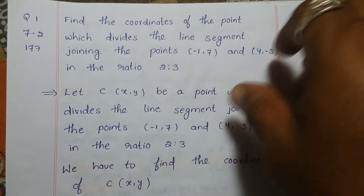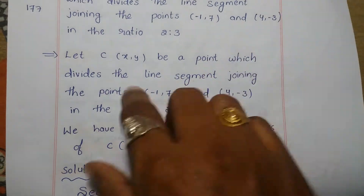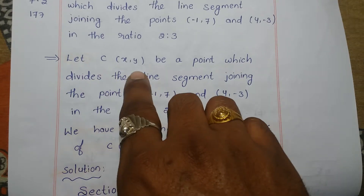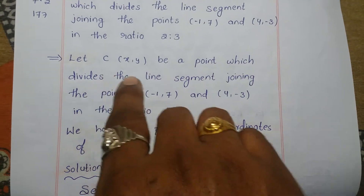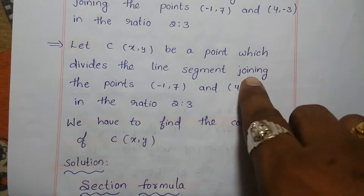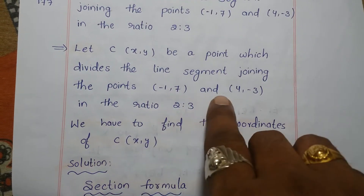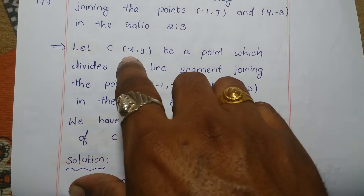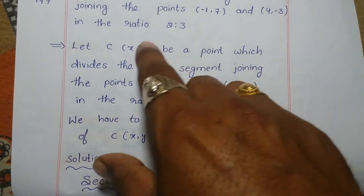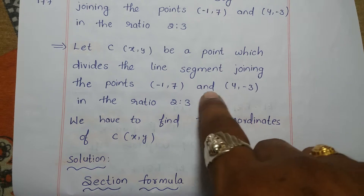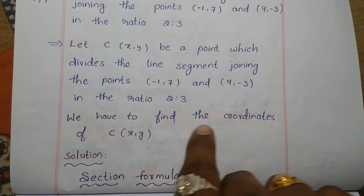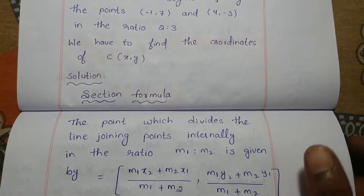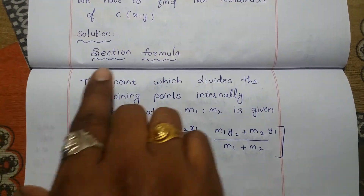So now let the point be (x, y). Let C be a point which divides the line segment joining the points in the ratio 2 is to 3. So we are taking that one point, that is C, which is dividing the line segment in the ratio 2 is to 3. We have to find the coordinates of C, that is (x, y). For that we are using the section formula.